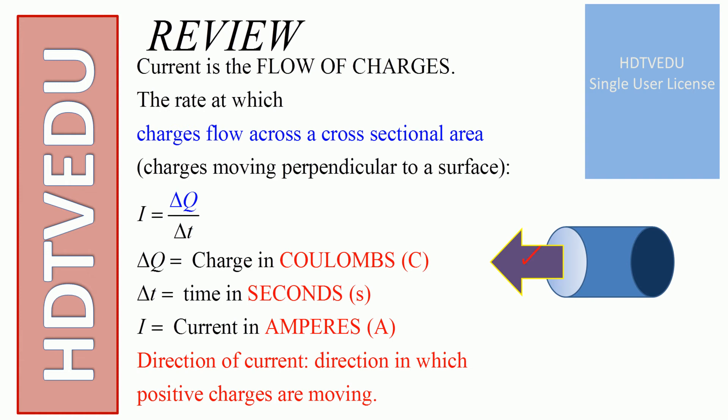And what is current? The rate at which charges flow across a cross-sectional area. I is equal to delta Q over delta T.